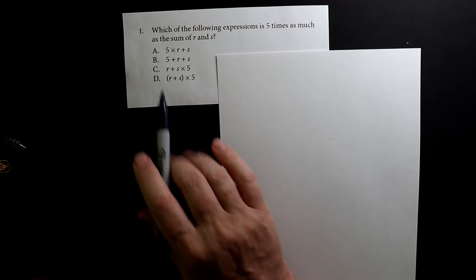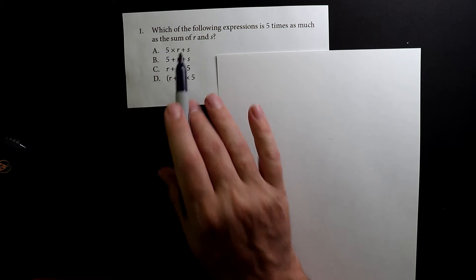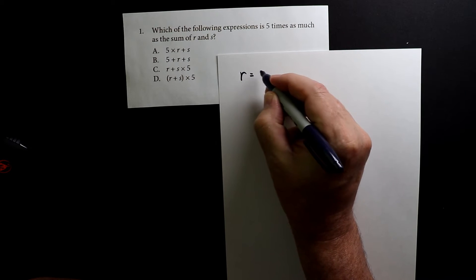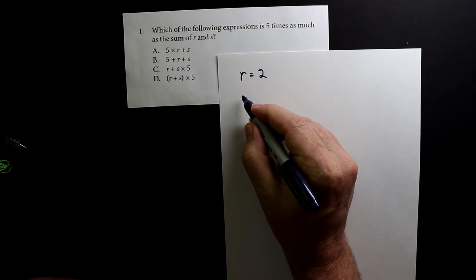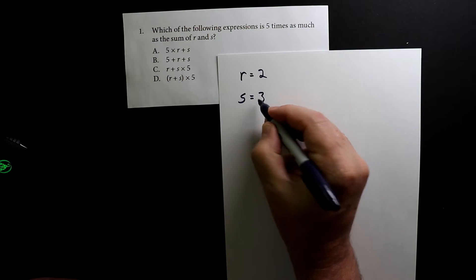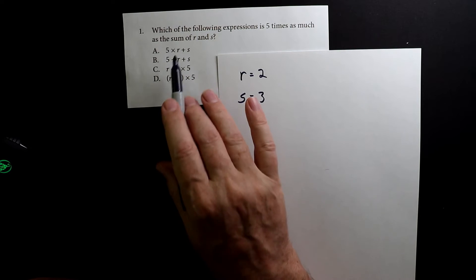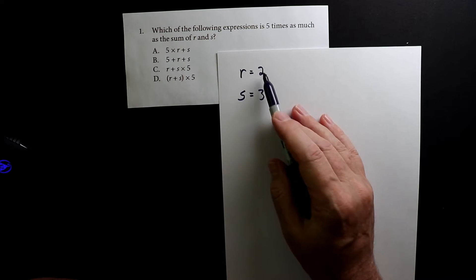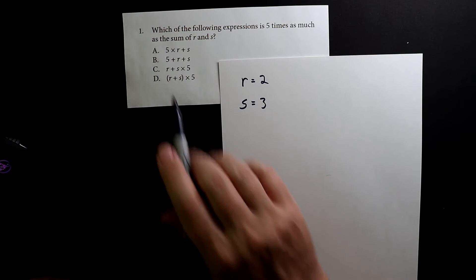What I want to do is give r and s a value. Let's say r equals 2 and s equals 3. We're going to replace these variables with these numbers and see how this works.